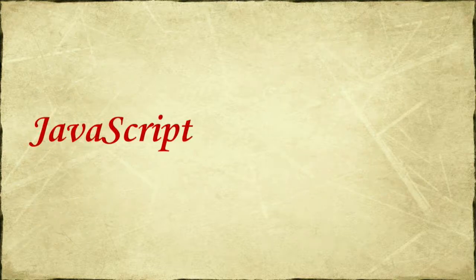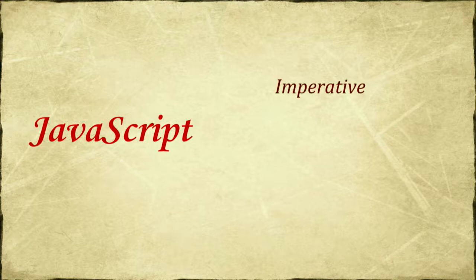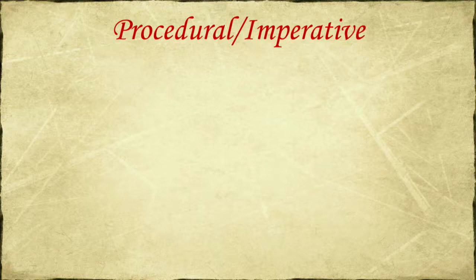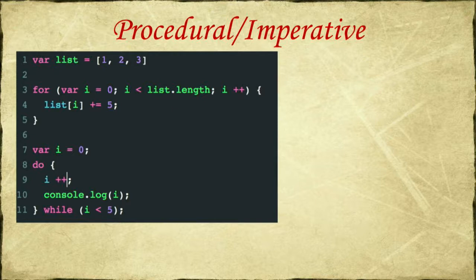We got our beautiful language that can be, at the same time, imperative, object-oriented, and functional. How can it be all three? Let's look at the details. Procedural or imperative is very simple — step by step, we tell what to do, when to do it, how to do it. For loops, while loops, do loops, if statements — all this simple stuff that you can write in JavaScript.